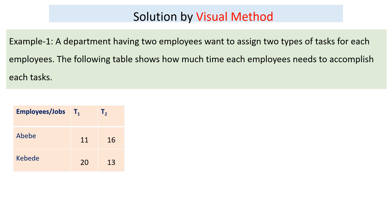Required to accomplish each task for each employee. For example, Abeba can accomplish task 1 in a faster way than task 2, so we can assign Abeba to task 1 and Cabada to task 2. This is just the estimation method because it's a 2×2 matrix, but if the matrix is higher than 2×2 it is very challenging.